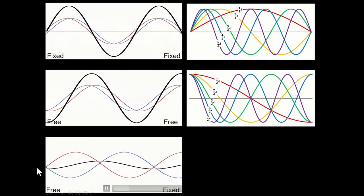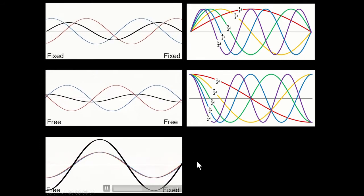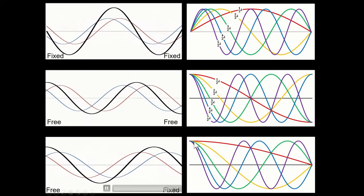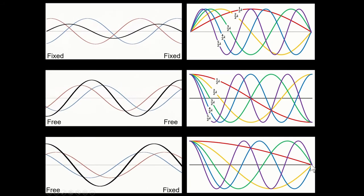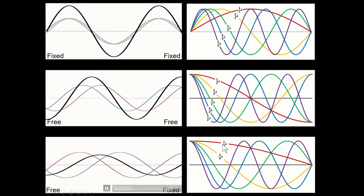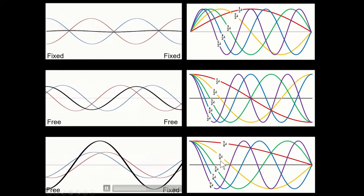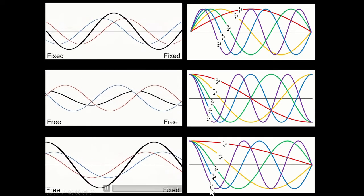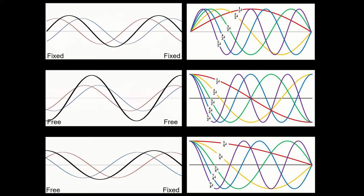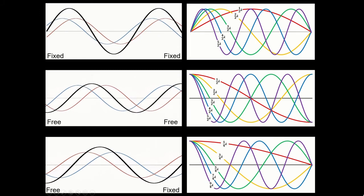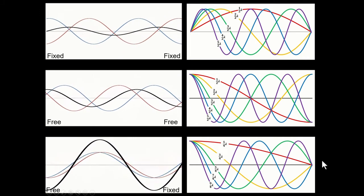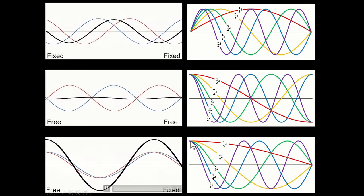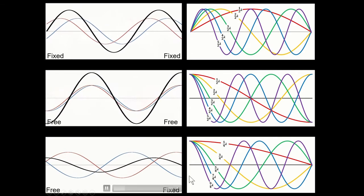The other condition is where something is free on one end and fixed on the other. The largest wavelength that would fit is the fundamental, or first harmonic, which is a quarter of a wavelength. The next would be three quarters, then five quarters, seven quarters, nine quarters — odd multiples of quarter wavelengths — satisfying the condition of starting at a node where it's fixed and ending at an anti-node where the medium is free.